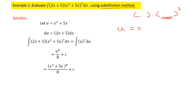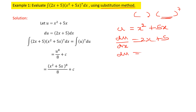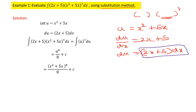Let u = x² + 5x. Differentiating both sides with respect to x gives du/dx = 2x + 5, or equivalently du = (2x + 5) dx. Notice that this matches the remaining terms in the original problem.